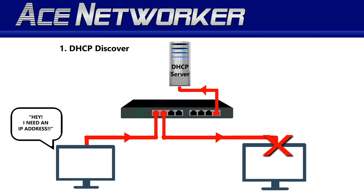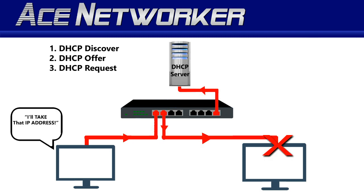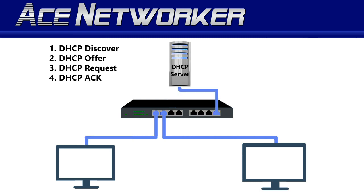For the DHCP Offer, that's step two in the process. When the DHCP server gets that message, it responds with: I understand, here's an IP address you can use that's not being used by any other host on this network segment. Then we move on to step three, the DHCP Request, where the host says: I'll take that IP address, and it sends that request to the DHCP server.